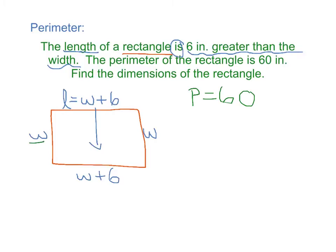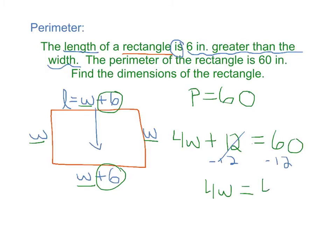I have 1, 2, 3, 4W plus 6 plus 6 is 12. So 4W plus 12 equals 60. I can now solve for W. I'm going to first subtract 12 on both sides to get that 4W equals 48. And then divide both sides by 4.